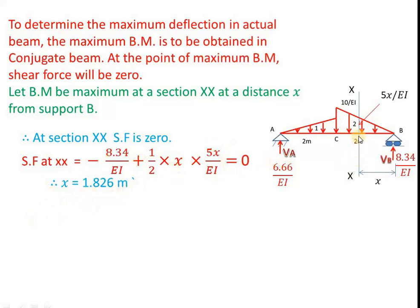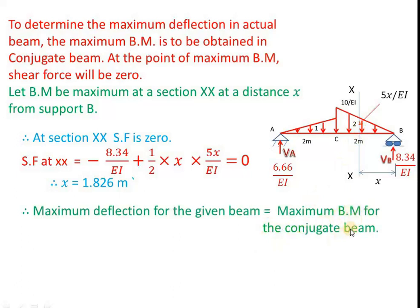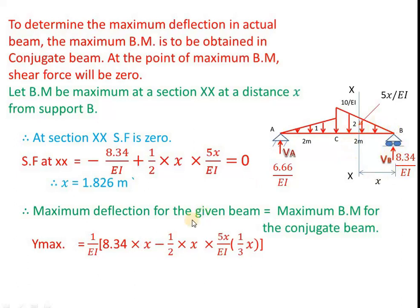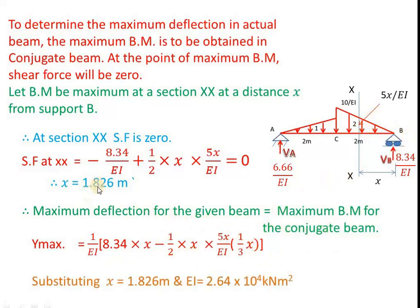Once we get x = 1.826 m, that is the location of maximum bending moment (zero shear force). Now, the maximum deflection for the given beam equals the maximum bending moment for the conjugate beam at section x-x. Coming from the right side: 8.34 × x minus the moment due to the triangular load about this section, which is 1/2 × x × (5x/EI) × (x/3). Substituting x = 1.826 m and the given value of EI, we get y_max = 0.385 m.